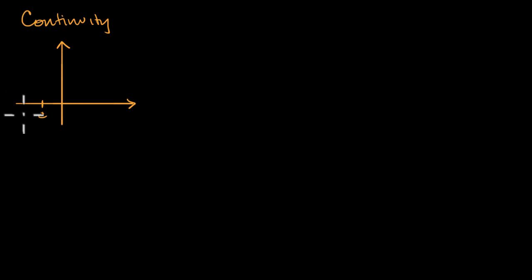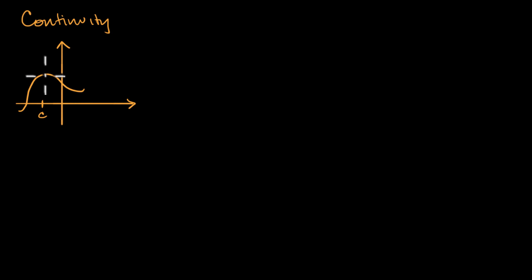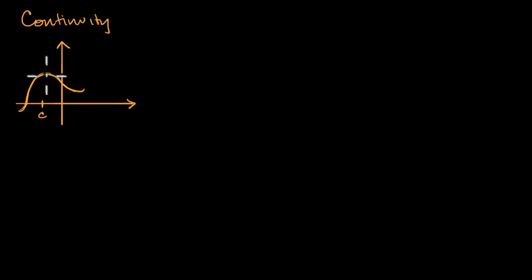Let's think about the point right over here — let's say that's x equals c. If I can draw the graph at that point, the value of the function at the point, without picking up my pencil or pen, then it's continuous there. I could just start here, and I don't have to pick up my pencil — I can go through that point, so we could say that our function is continuous there.